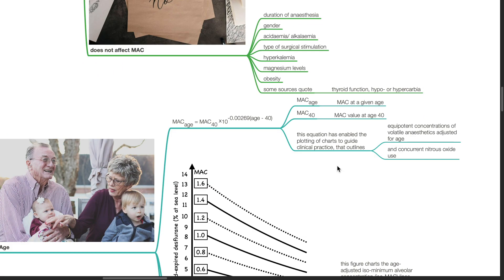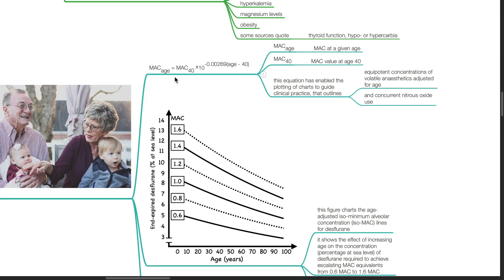The following equation has enabled the plotting of charts to guide clinical practice that outlines equipotent concentrations of volatile anesthetics adjusted for age and concurrent nitrous oxide use. MAC age equals MAC 40 times 10 to the power of negative 0.00269 times age minus 40, where MAC age is the MAC at a given age, and MAC 40 is the MAC value at age 40.